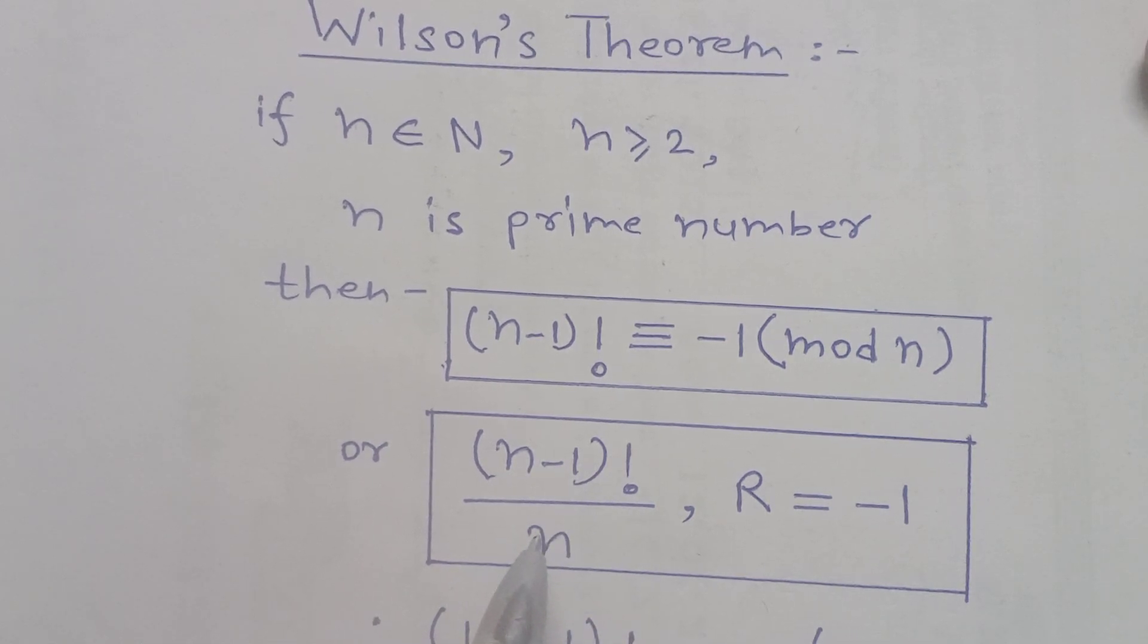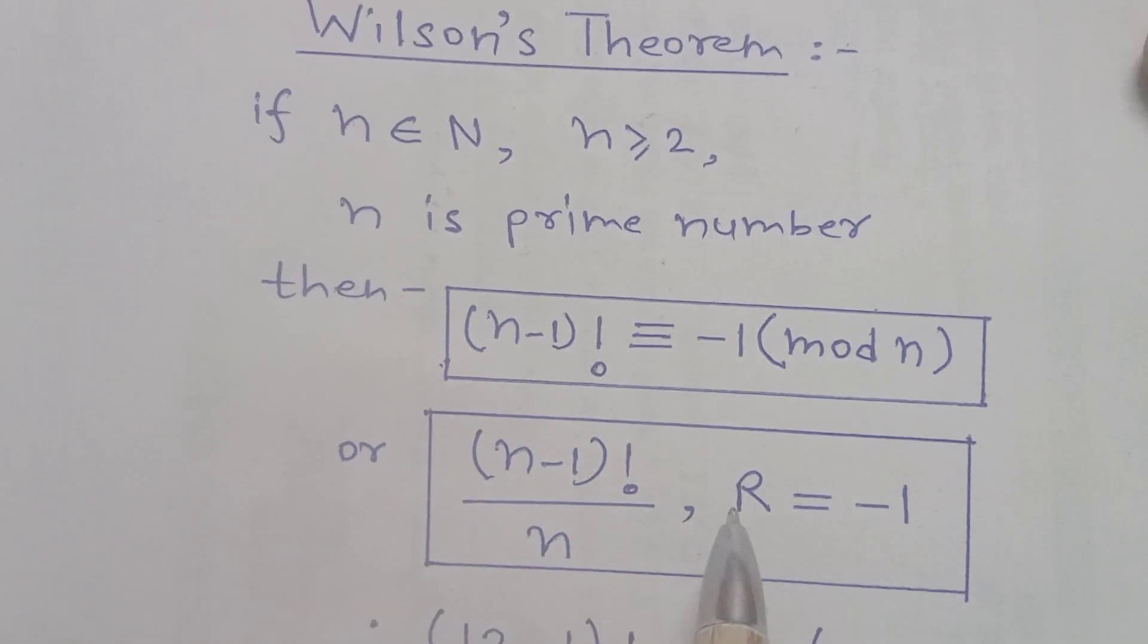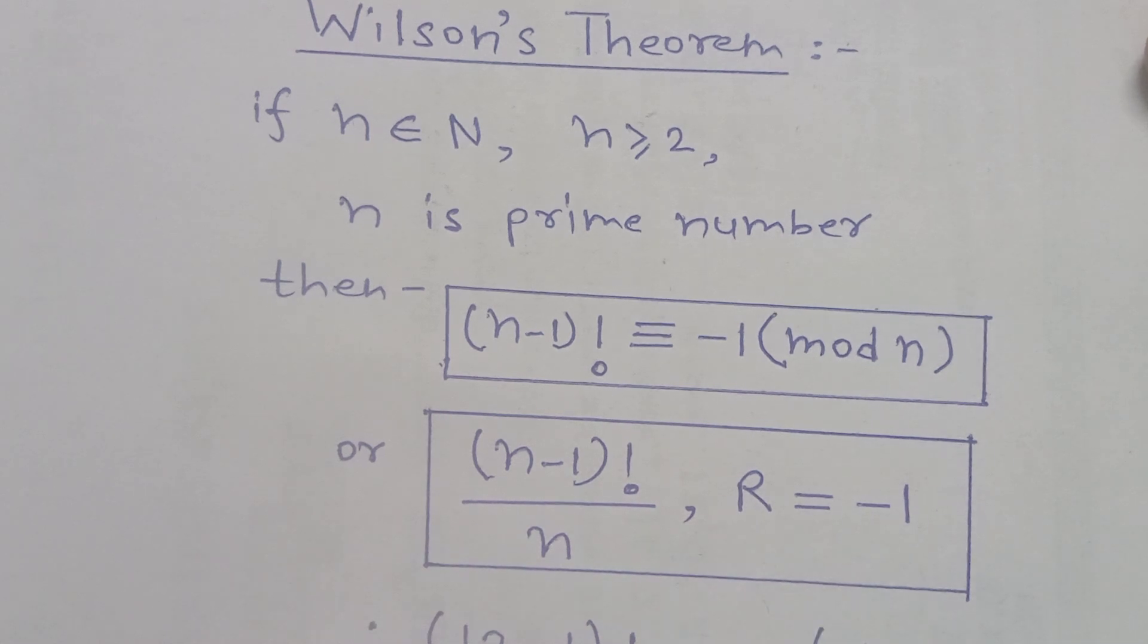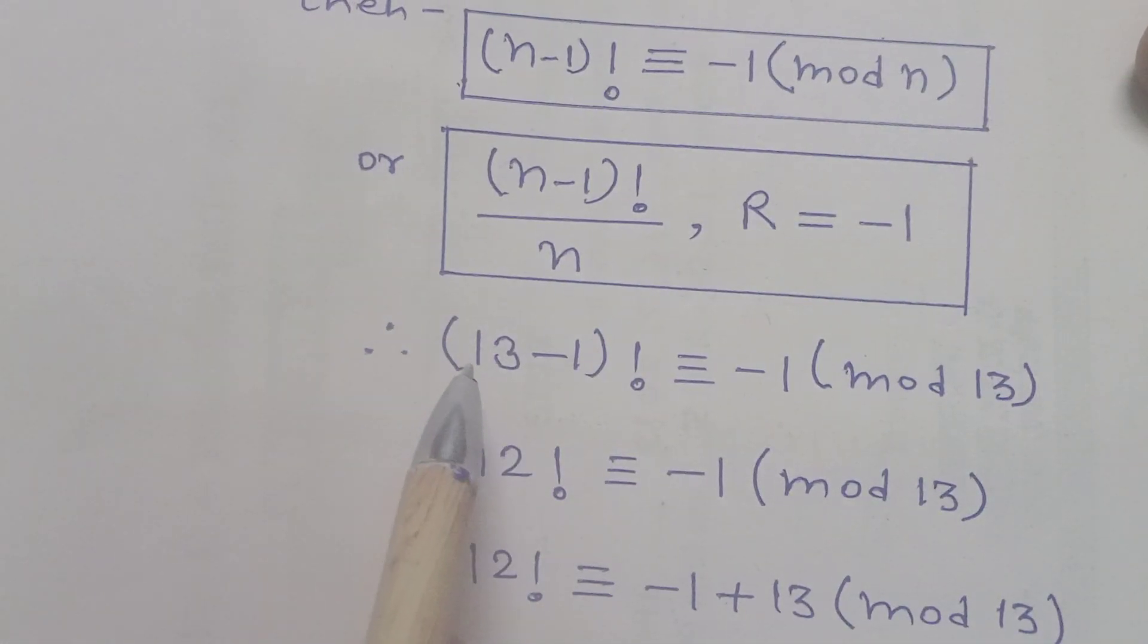It can be written as (n-1)! divided by n, then the remainder will be -1. So we have a problem: it can be written as (13-1)! is equal to -1 modulo 13.